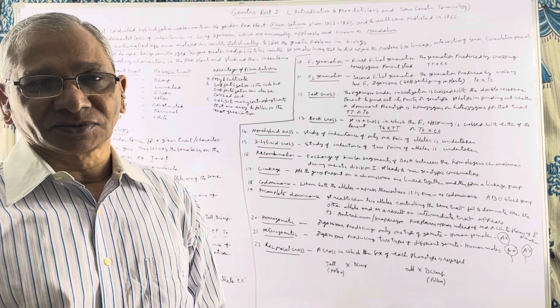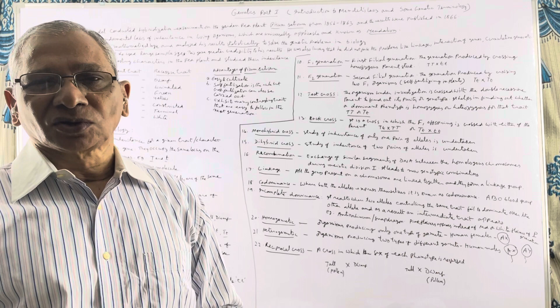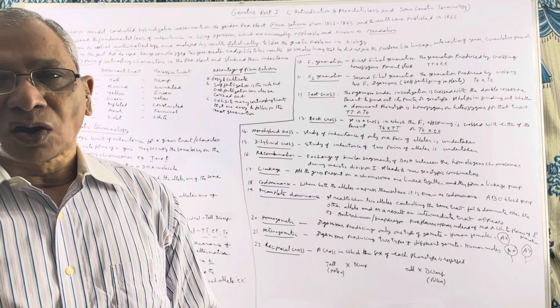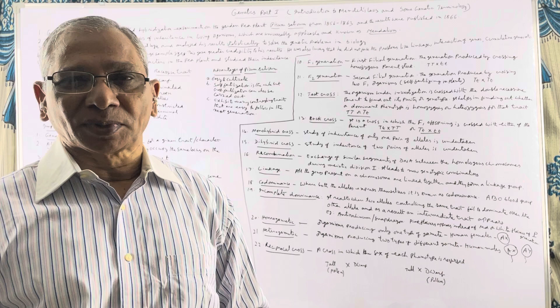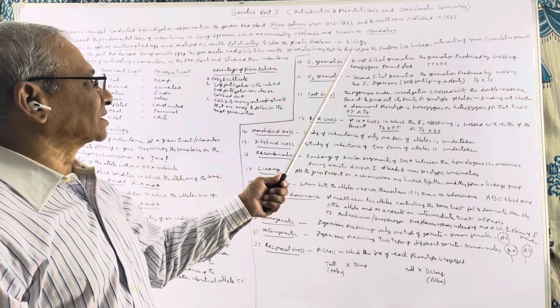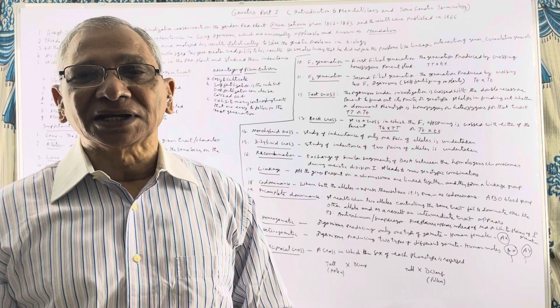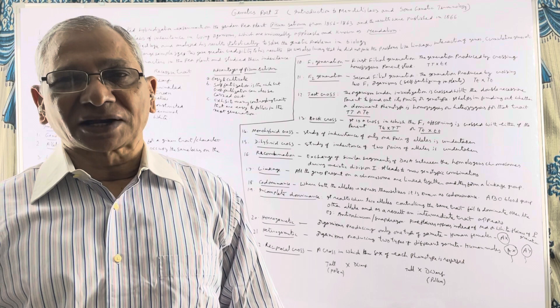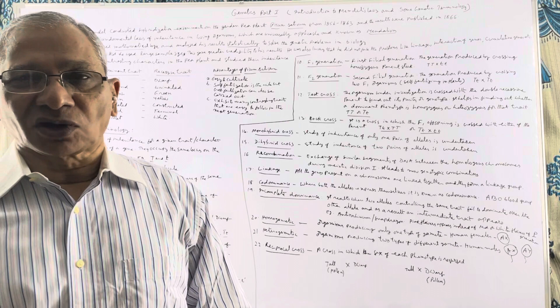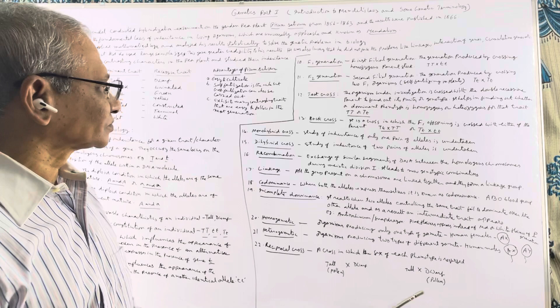Nobody bothered to understand or follow the laws discovered by Mendel because at that time all the scientists were interested in the theory of natural selection proposed by Charles Darwin. His laws were rediscovered in the year 1900 by three scientists independently: T.H. Morgan, de Vries, and Von Tschermak. Only in the year 1900 did the importance of Mendel's laws come into the scientific world.